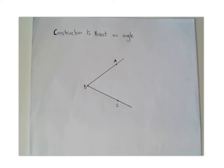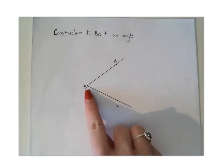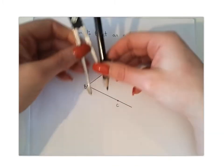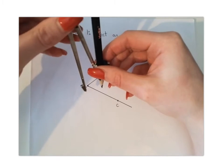What we're going to do is start off by placing the compass at the angle's vertex, which we've labeled B, and I want you to stretch your compass to maybe one or two centimeters. It doesn't have to be anything too specific.